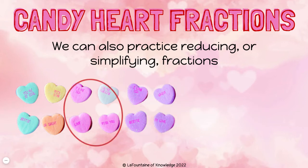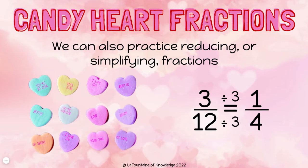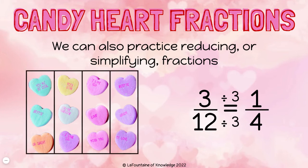Let's take a look at our three twelfths pink. Three and twelve can both be divided by three. Three twelfths in simplest form is one fourth. To look at that visually, we'll have to rearrange our candy hearts. Now I can divide up the hearts into four equal groups and I can see that one of those fourths is pink.